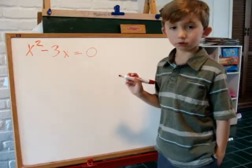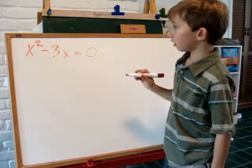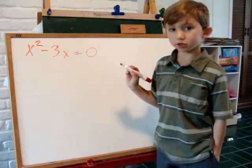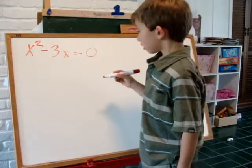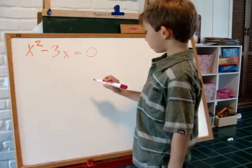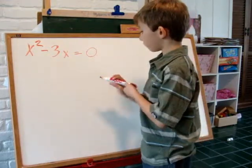Now we're going to solve another quadratic equation. x squared minus 3x equals 0. This one can easily be solved by factoring.